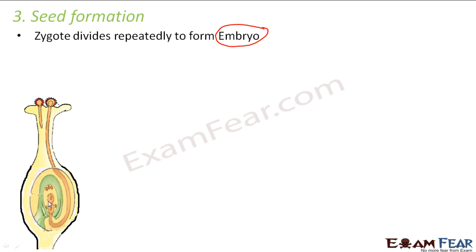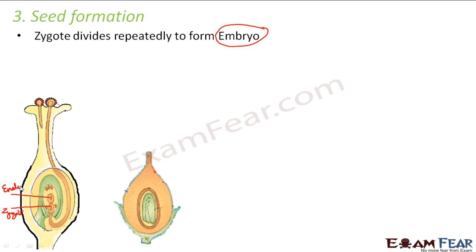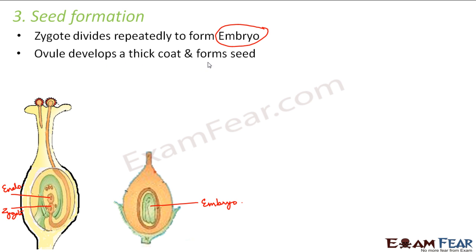Here we can see the zygote and the endosperm. This zygote will undergo repeated division and become the embryo. This embryo, shown as the green-colored structure, is what the zygote becomes after many divisions — forming a multi-celled embryo. This embryo plus the endosperm, shown here as the yellow-colored structure, will together form the seed.